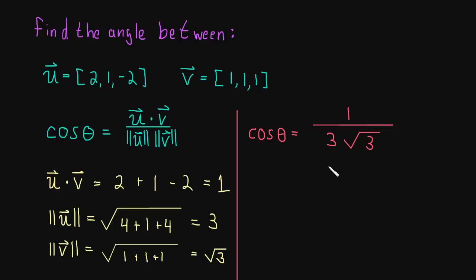This is the cosine of the angle. To find the angle, theta is just equal to the arc cos, or the inverse cos, of 1 divided by 3 times the square root of 3.